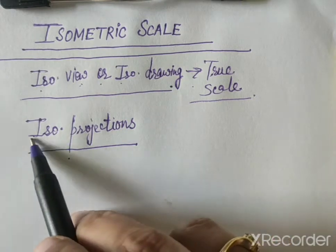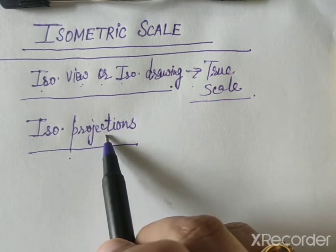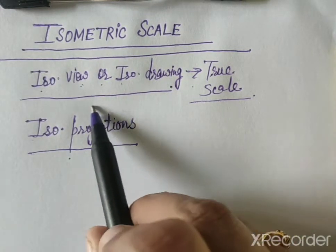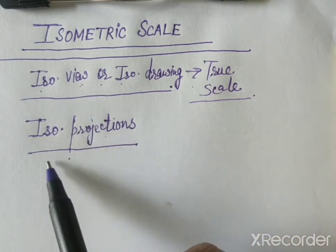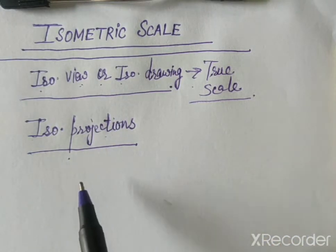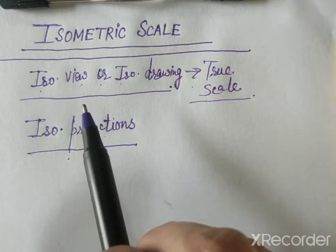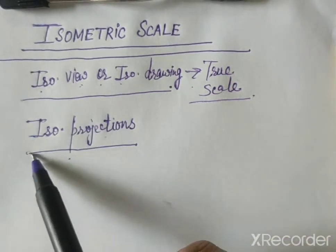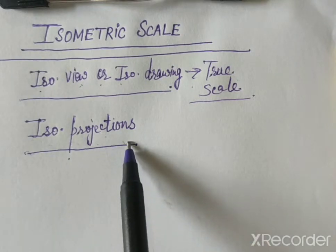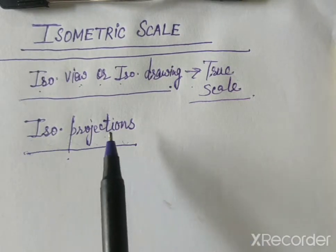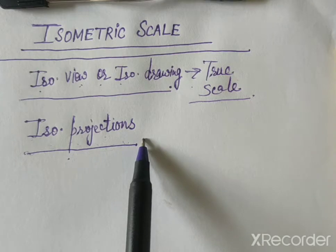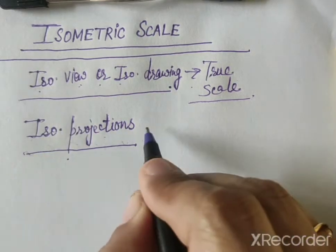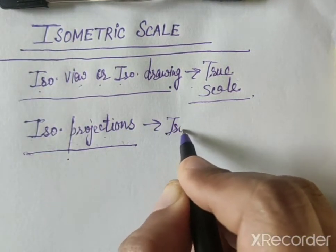And when we want to draw the isometric projections of any object, in the case of projections, the lengths are shortened because the object is kept in such a manner that all the three surfaces are visible. So all the lengths are shortened in case of projections. So when we want to do the isometric projections of any object, we will use the isometric scale.